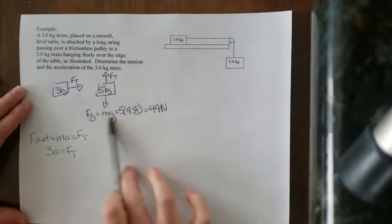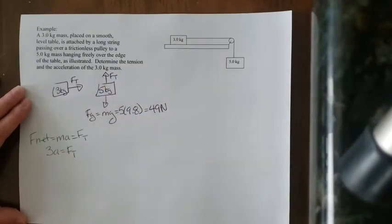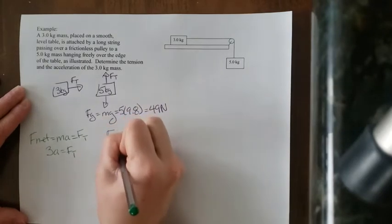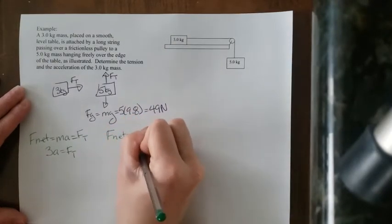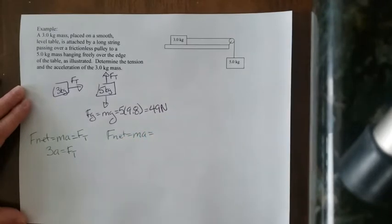For the second diagram, the second free body diagram, I'm going to do the same thing. I'm going to start with my Fnet formula. So I got Fnet is equal to MA is equal to the sum of the forces. Now the question is, which force do you write down first?